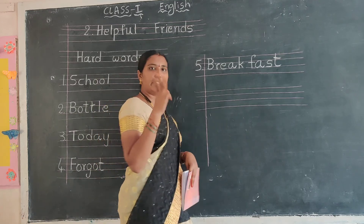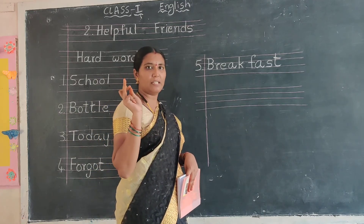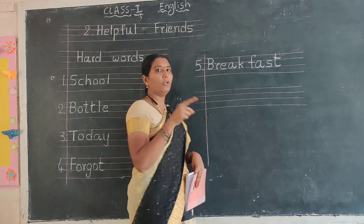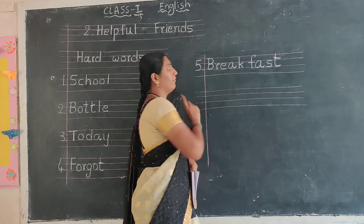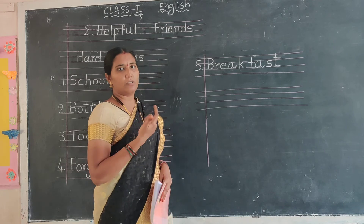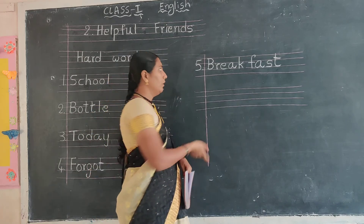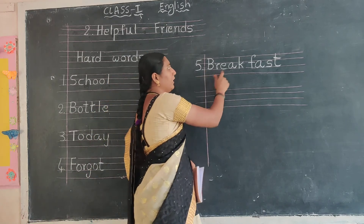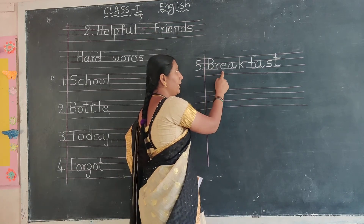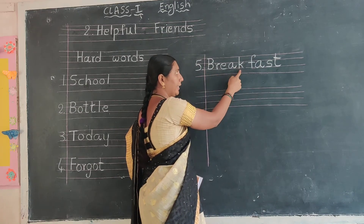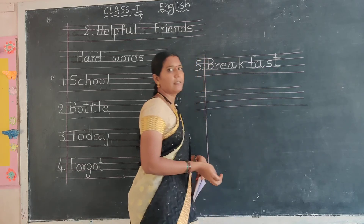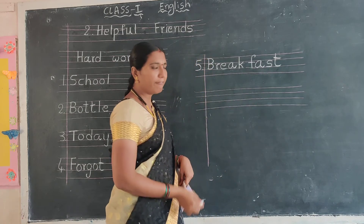Now, breakfast is the first meal. We eat three times a day — breakfast, lunch, dinner. Breakfast is the first meal of the day, then tiffin, then dinner. B-R-E-A-K, Break. F-A-S-T, Fast. Breakfast.